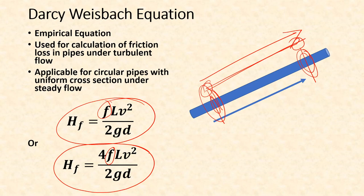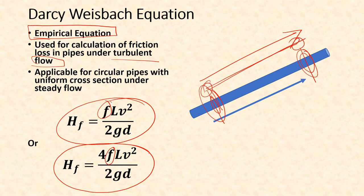This is an empirical equation, which means we cannot derive it entirely from basic knowledge of physical phenomena and mathematics. At some point we have to rely on experimentally available data. This equation is applicable for turbulent flow, but in some modified form it can also be used for laminar flow.